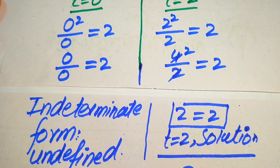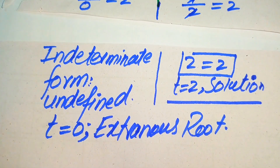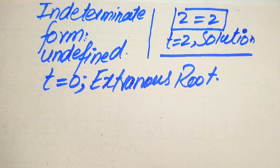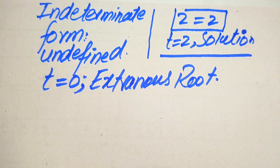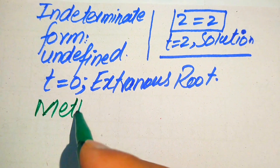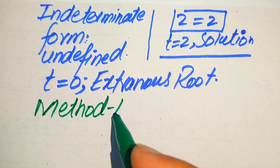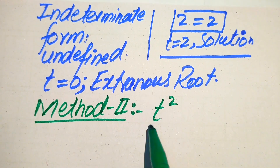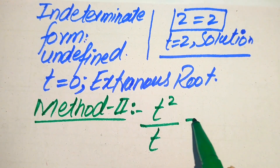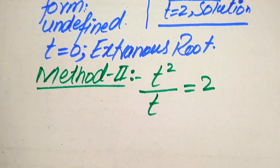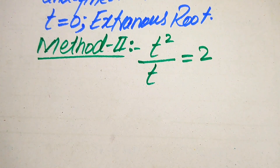So from the first method, t equals 2 is the solution and t equals 0 is the extraneous root. Now we solve this problem using the second method. We copy down the equation: t squared divided by t equals 2.